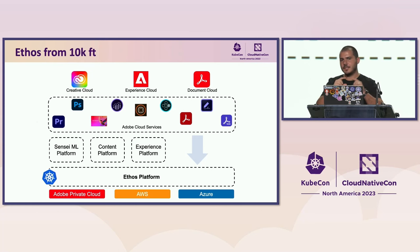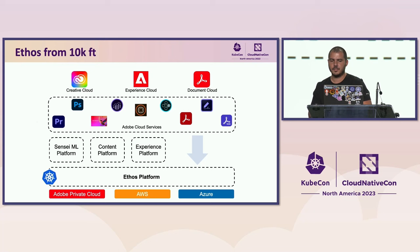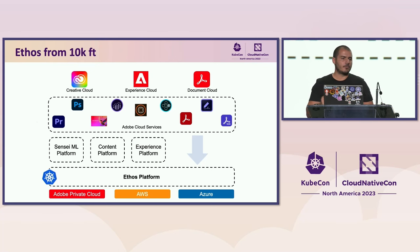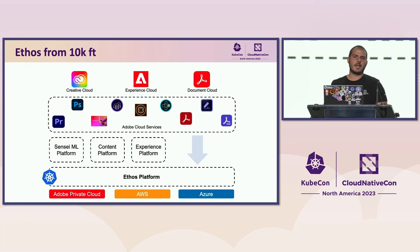Ethos operates on three main cloud providers: Adobe Private Cloud, AWS, and Azure.